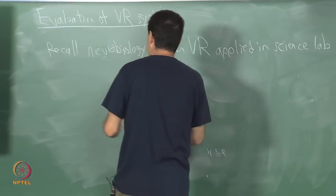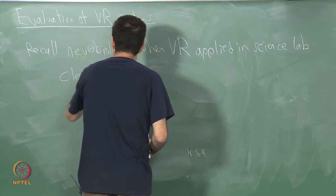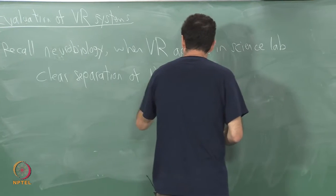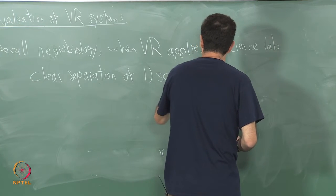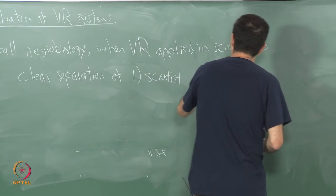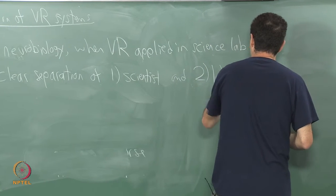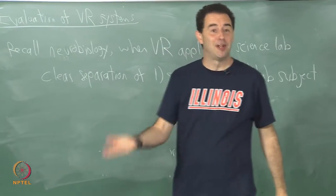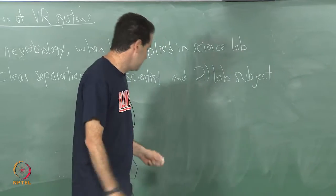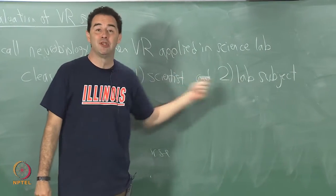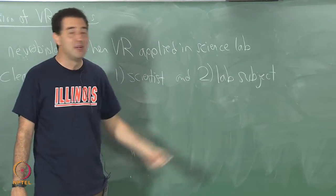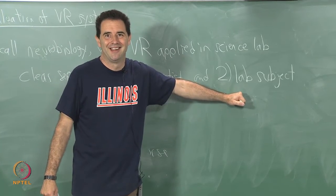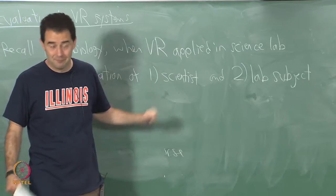When we do that, there is very clear separation of the scientist and the laboratory subject. However, if you're an engineer or developer of virtual reality systems, you may commonly be moving back and forth between these two without even being very much aware of it. Every time you try your experience, you become the laboratory subject, and then you go back and try to be the scientist again.